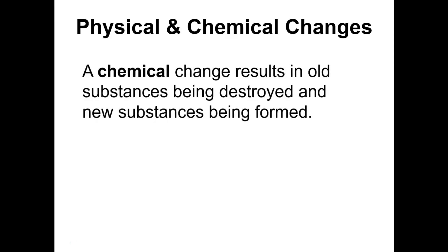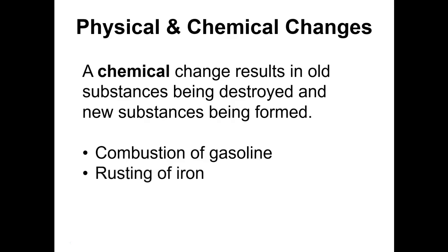A chemical change always results in old substances being destroyed and new substances being formed. Combustion of gasoline is a chemical process — I'm taking gasoline, reacting it with oxygen to form carbon dioxide and water. Rusting: pure iron reacts with oxygen in the atmosphere to form iron oxide. Old substances — iron and oxygen — are destroyed; new substance — iron oxide — is formed. Electrolysis of water: running an electrical current through water generates hydrogen gas at one electrode and oxygen gas at another, destroying water and converting it into new substances.